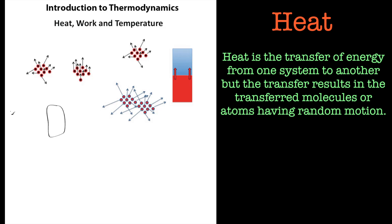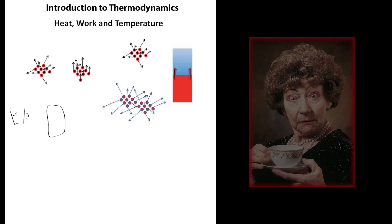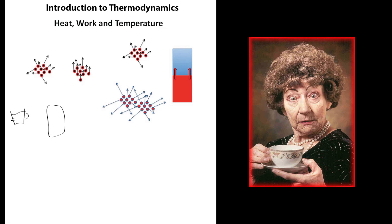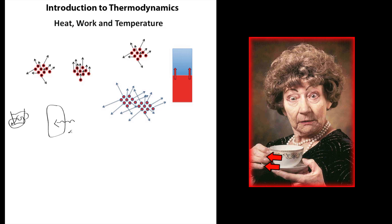To make it easier: imagine a cup of tea with a hand around it. The cup of tea is hot. We've all experienced this — heat will transfer from the hot cup of tea to our cold hand. So if we look at this as a system, our hand is the system we're interested in, the hot cup of tea is the surroundings, and heat is transferred into the system.